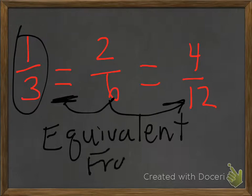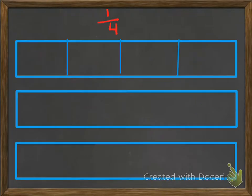Even though they look different, they actually have the same value — the same amount of space and the same number of parts put all together. Pause the video and see if you can do the same thing. We start off with one fourth — take the same whole piece divided into fourths — and see if you can find equivalent fractions to one fourth. Good luck.